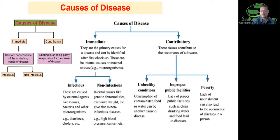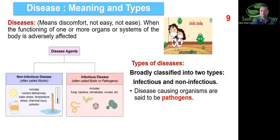Contributory causes include unhealthy conditions such as consuming contaminated food or water, which is very dangerous. Poor public facilities — for example, living in a locality where drinking water is not good — make you prone to many waterborne diseases. Lack of nourishment and an unbalanced diet are also important contributory causes. Poverty and standard of living can also play a very important role.